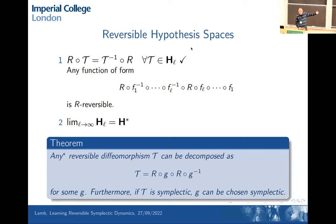The theorem — with a star, because it requires the map to be isotopic to the identity and some other mild properties — states that any reversible diffeomorphism can be written in the form R g R g⁻¹, and if it's also symplectic then we can choose g to be symplectic. The only thing I need to learn is g. Rather than using a general map, I just learn g — that's where the structure comes in — and I can approximate g by compositions of Hénon maps or by other results on finding good approximations.